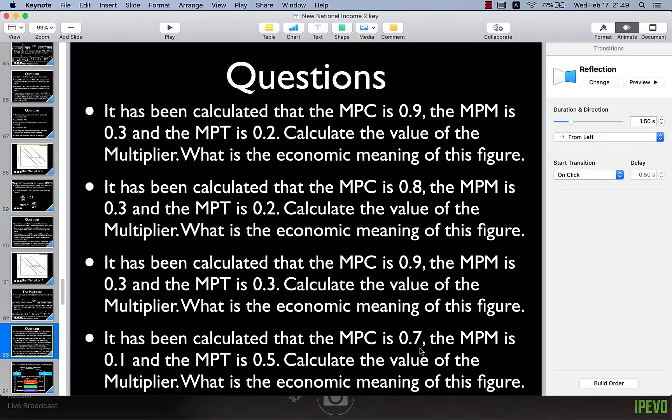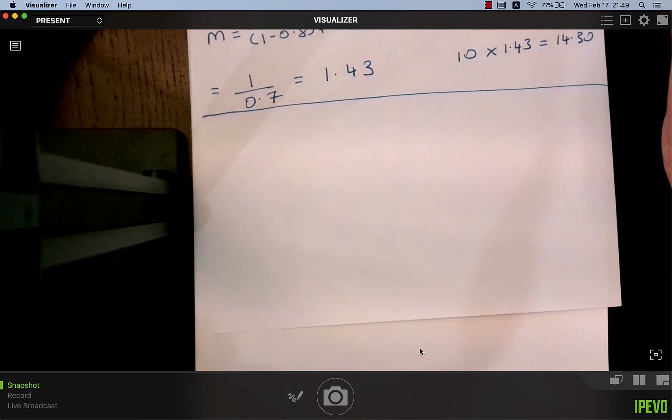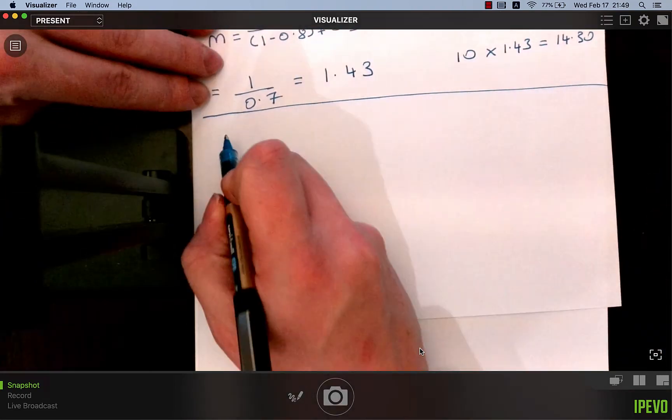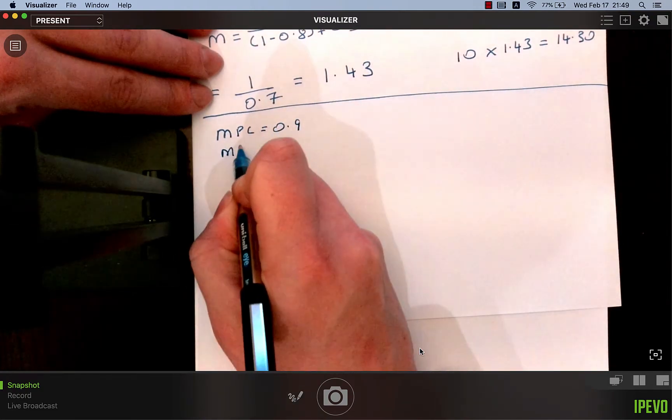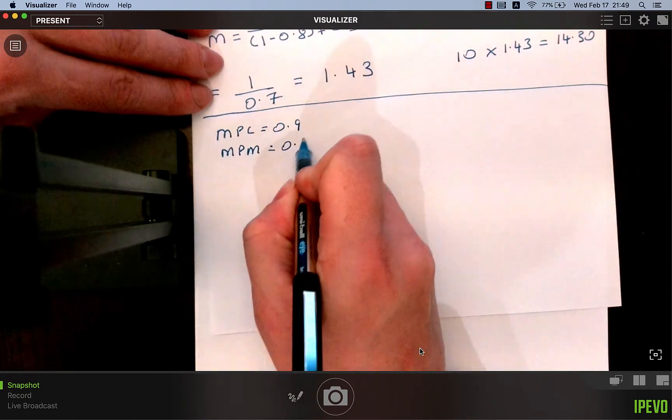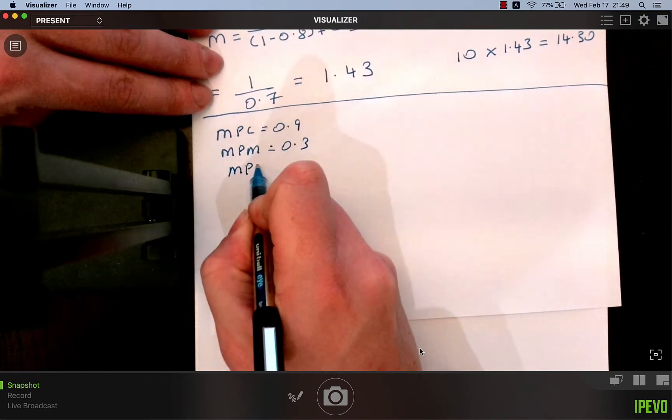On to the third one. It has been calculated that the MPC is 0.9, the MPM is 0.3, and the MPT is 0.3. Calculate the value of the multiplier. MPC equals 0.9, MPM equals 0.3, MPT equals 0.3.